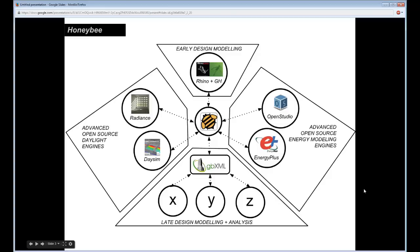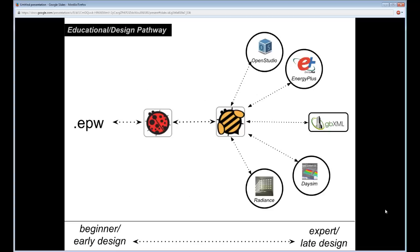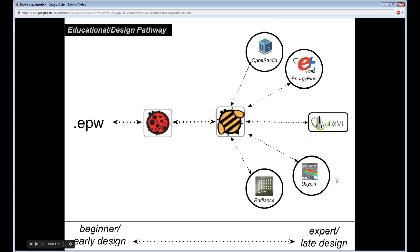More important than what these individual tools do is that Ladybug and Honeybee together form an educational and design pathway. It's meant to lead you from very basic understandings of climate and weather data — useful in early design, especially if you're a beginner — and over time, as you get used to using the plugins, you'll gain access to some of the most advanced, state-of-the-art energy modeling and daylight modeling tools that exist right now, capable of driving deep into late design.